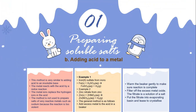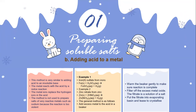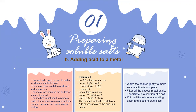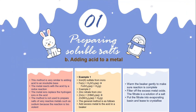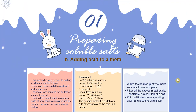Add excess metal to the acid in a beaker and warm gently to make sure the reaction is complete. Filter off the excess metal. The filtrate is a solution of the salt. Finally, put the filtrate into an evaporating basin and leave to crystallize.